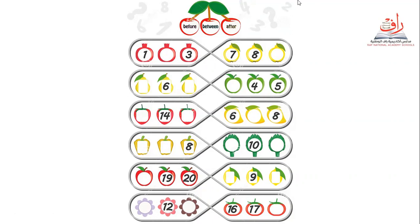We have here a tree — there is an apple tree. And we have three apples, every apple. We have a word here, let's read them. We have: before, between, and after. So teachers, this is apples and fruit — all kinds of vegetables and fruits that we have.